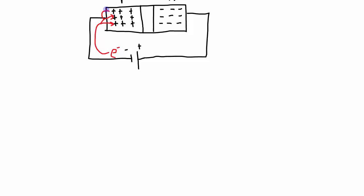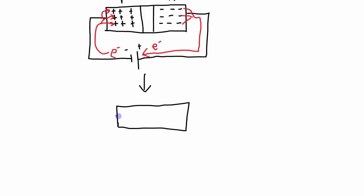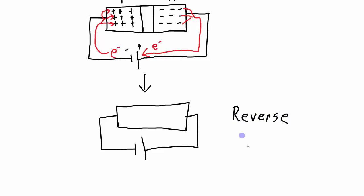Electrons flow into the P side and fill up the holes. Simultaneously, the extra electron charge carriers on the N side are attracted toward the positive side of the power supply and flow out. All the extra electron charge carriers are pulled out, and all the extra positive charge carriers — the holes — are filled. After a brief period of time, the PN junction no longer conducts. This orientation, with positive connected to N-type and negative to P-type, is called reverse biased.